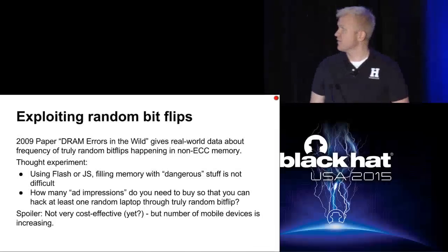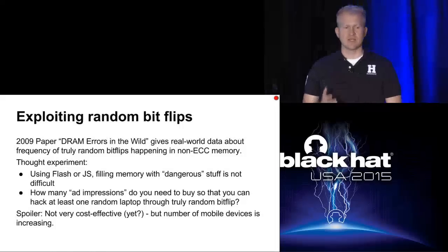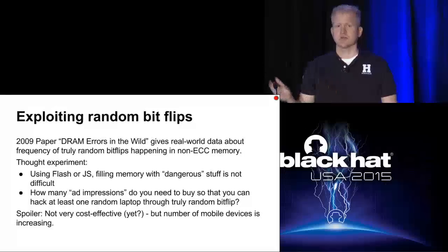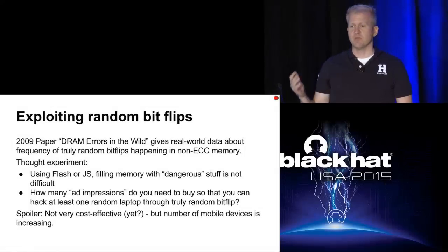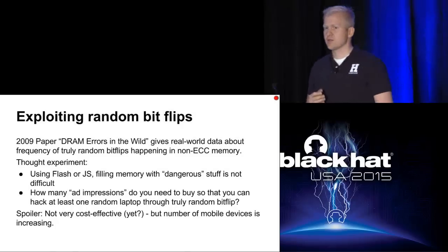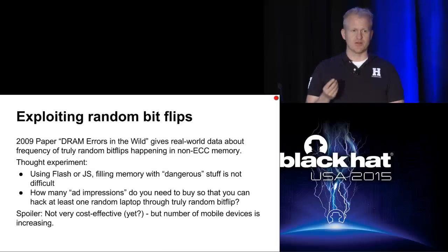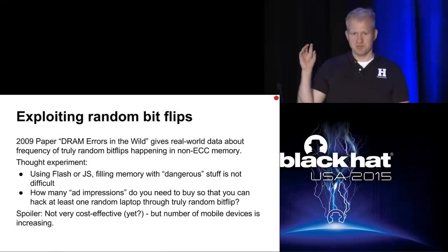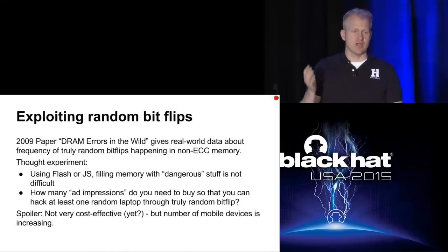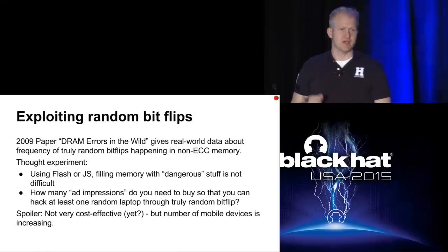There was a paper in 2009 published by Google that examined the prevalence of truly random bit flips in Google's big server fleet. It gave quantitative numbers on how often a bit just flips randomly in DRAM without any interaction. That leads to an interesting thought experiment: these days you can buy ad impressions that allow you to run JavaScript or Flash inside someone else's computer. So, if random bit flips happen that often, and if you can exploit them to gain privileges from a JavaScript or Flash sandbox, how many ad impressions do you need to buy before you compromise a machine just by DRAM flipping a bit?